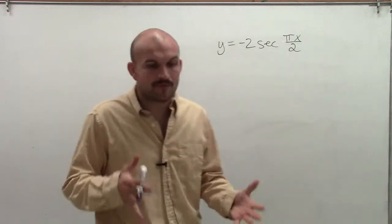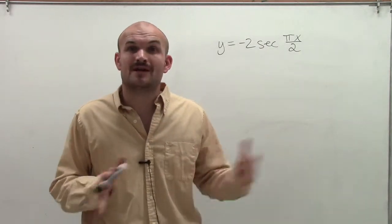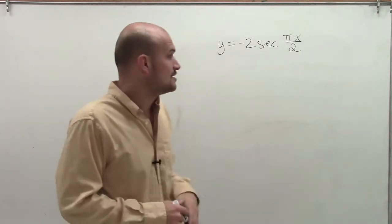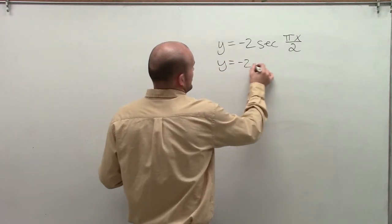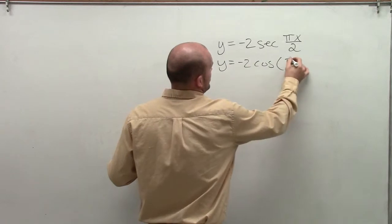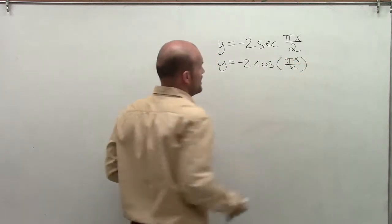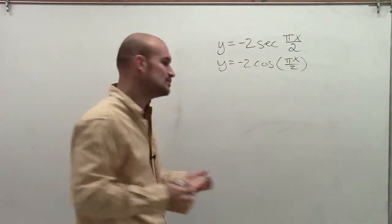So to do a problem like this, the main important thing is we need to graph our inverse function, which is cosine. So I'm going to immediately think of this as negative 2 cosine of pi x divided by 2. And that's going to help me graph it from what we're used to.